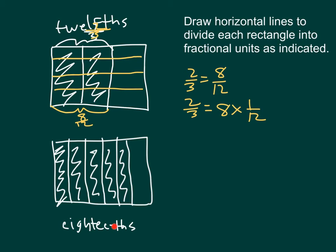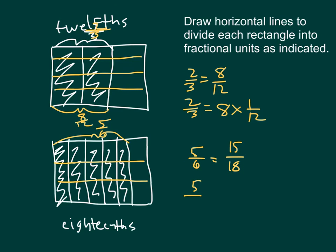For the second figure, we're asked to look at eighteenths. Originally we have 6 parts — sixths — and we're trying to get to eighteenths. How many horizontal lines do we draw? If we drew 1, we would be getting twelfths. So, let's draw 2, going from sixths to eighteenths. By drawing 2 horizontal lines, we divided that into 3 parts — that's why we went from 6 to 18. That means we have 15 eighteenths equaling 5 sixths, which we can write as 5 sixths equals 15 times one-eighteenth.